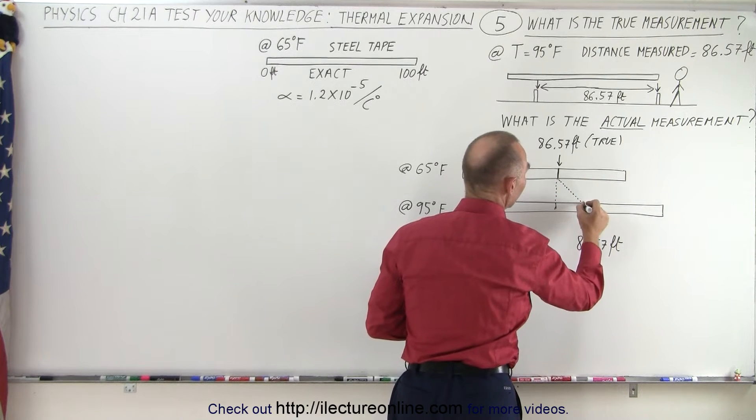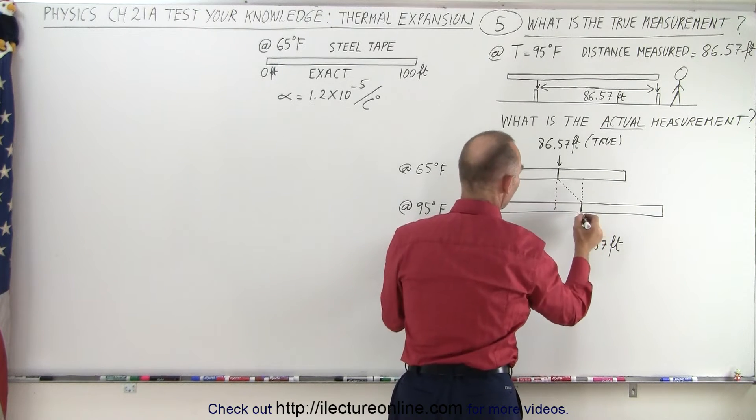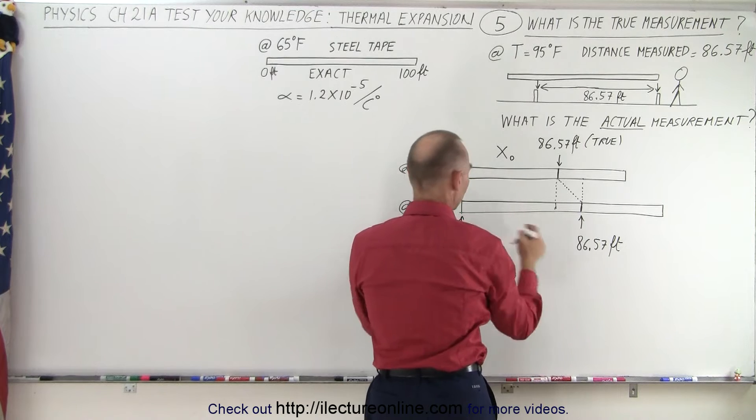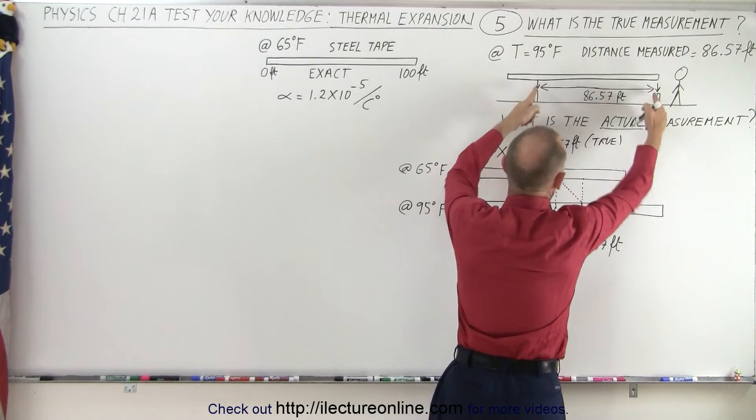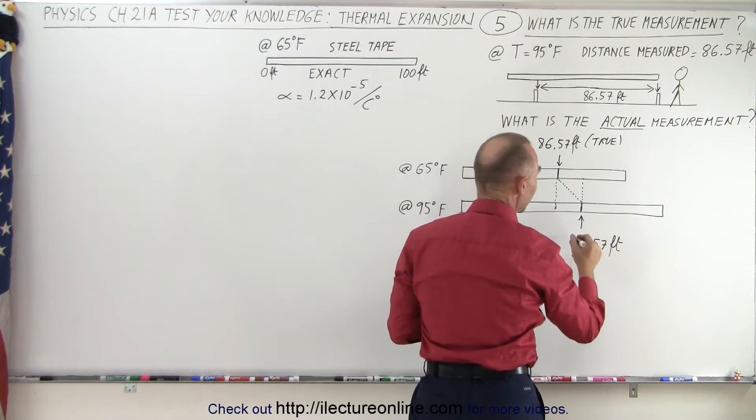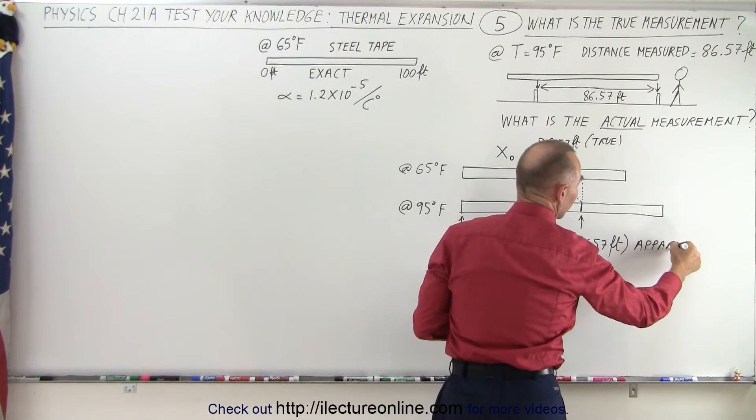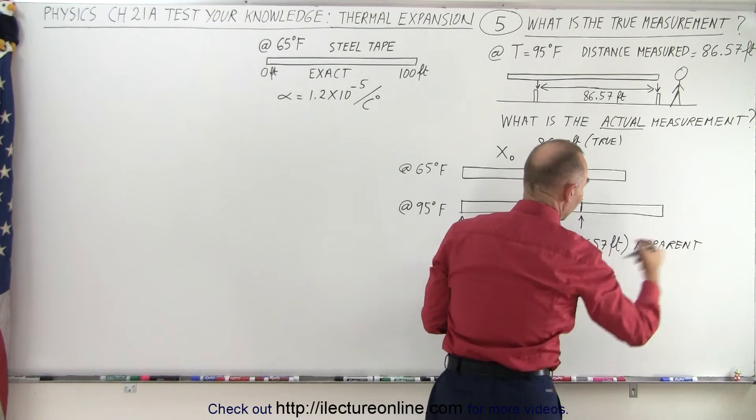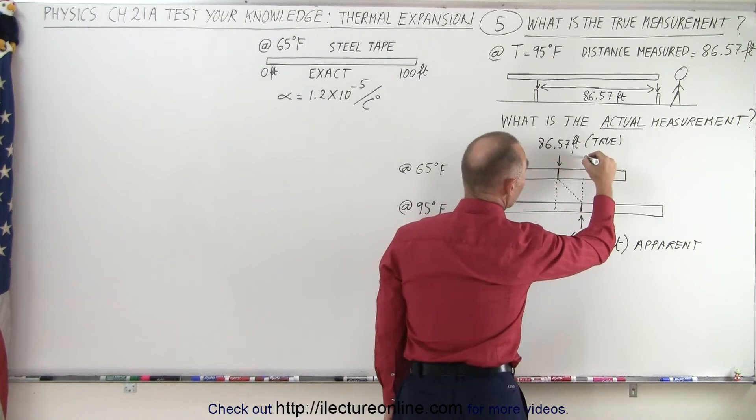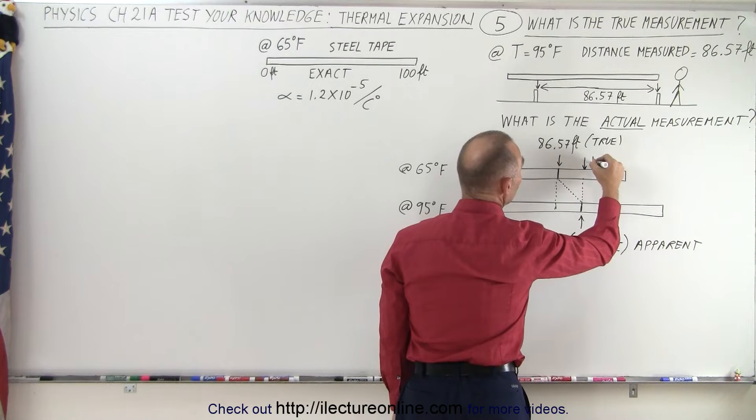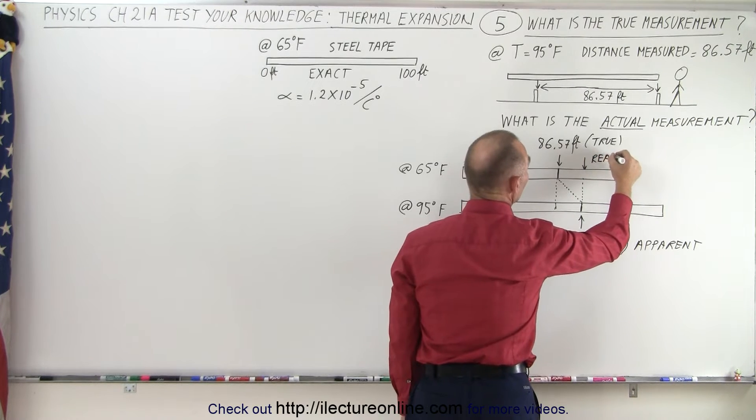So that means the measurement of the distance between the two points on the Earth, these two points are right here. This is the apparent distance. The real distance is actually greater than that. The real distance can be measured right here. So this would be the real distance, or the real measurement.